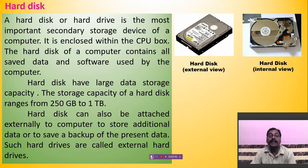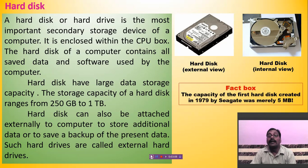A hard disk can be used externally to take a backup of the current hard disk inside the CPU box, or you can save additional data onto the external hard disk — such hard drives are called external hard drives. As a fact, the capacity of the first hard disk created in 1979 by Seagate was merely 5 MB.